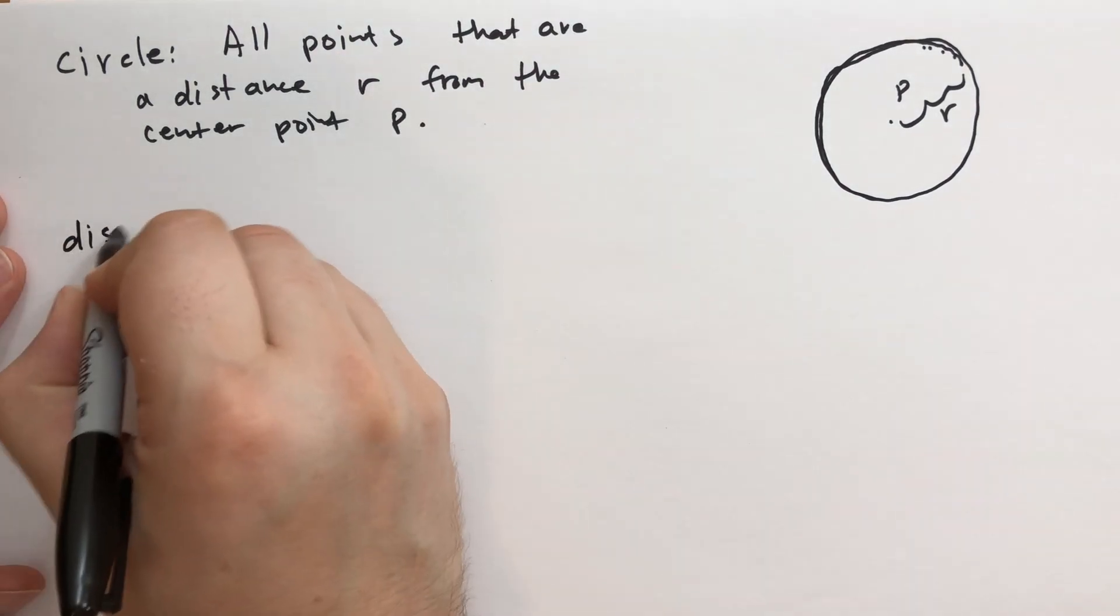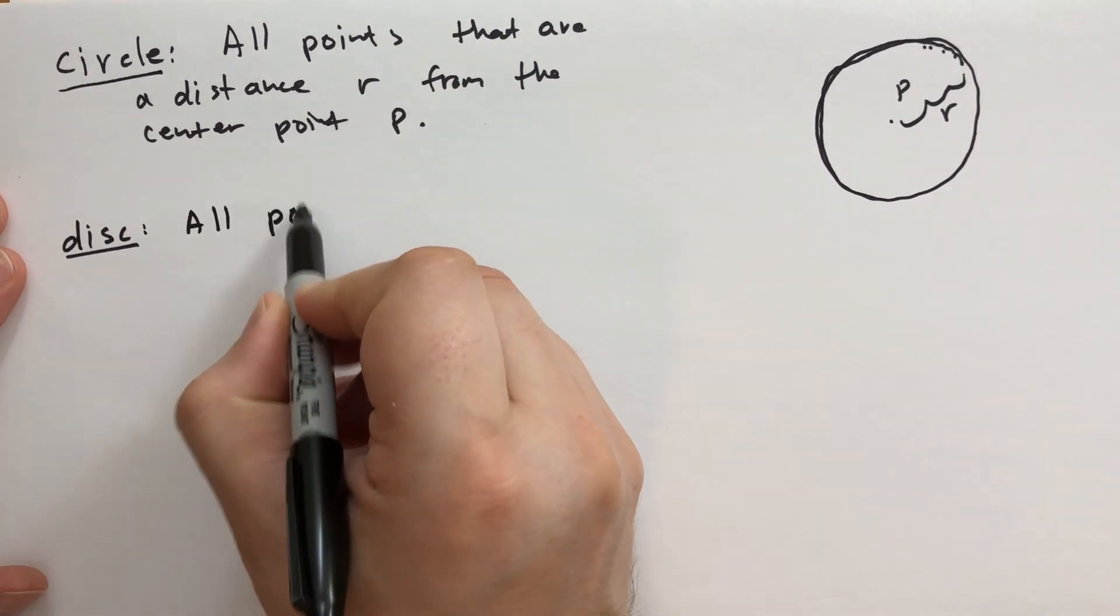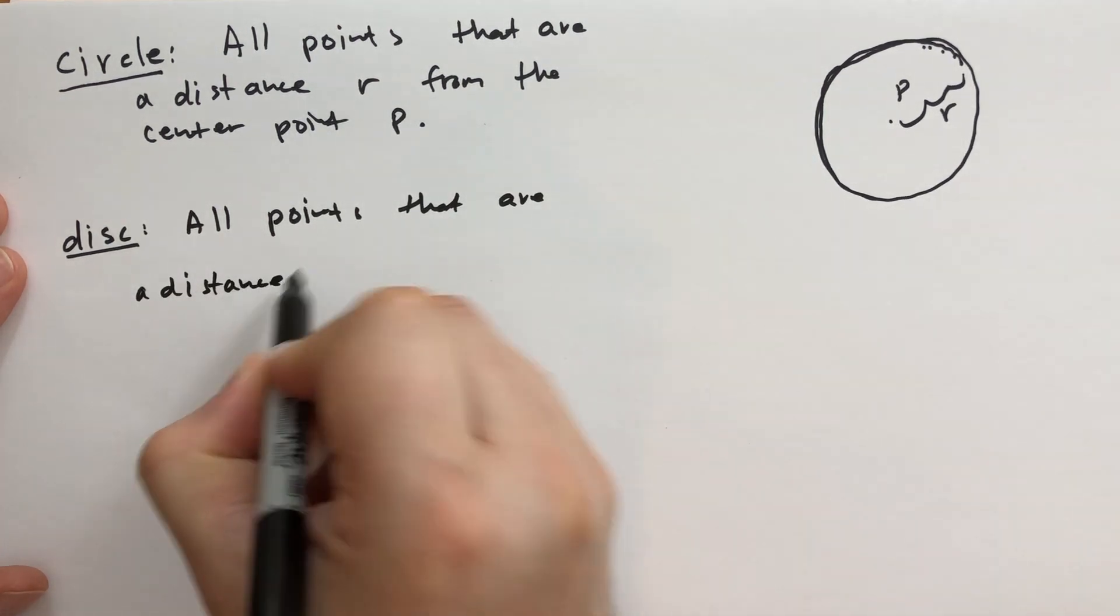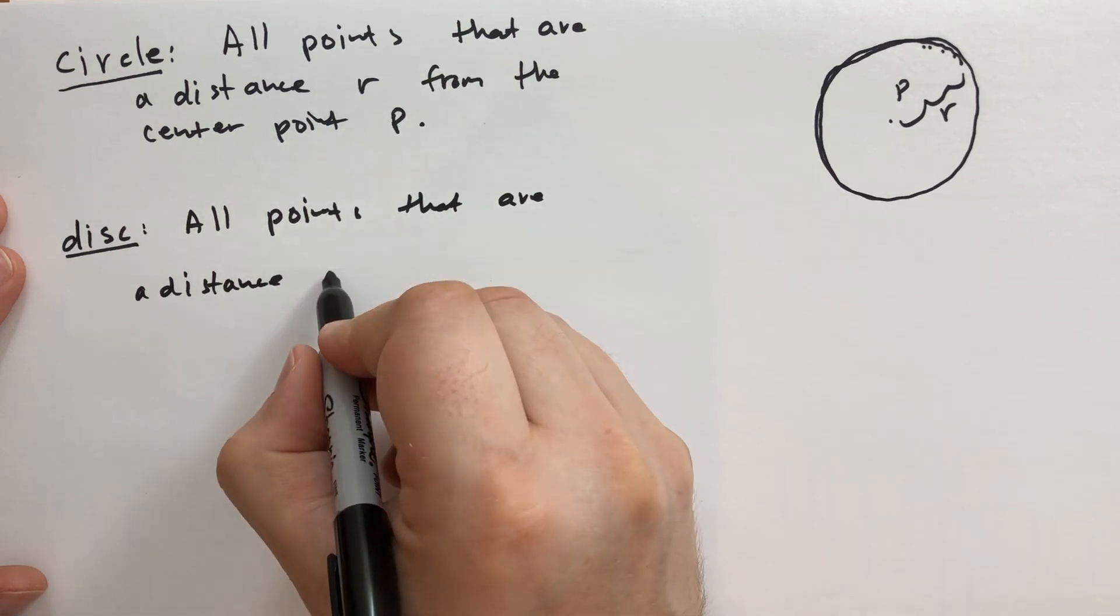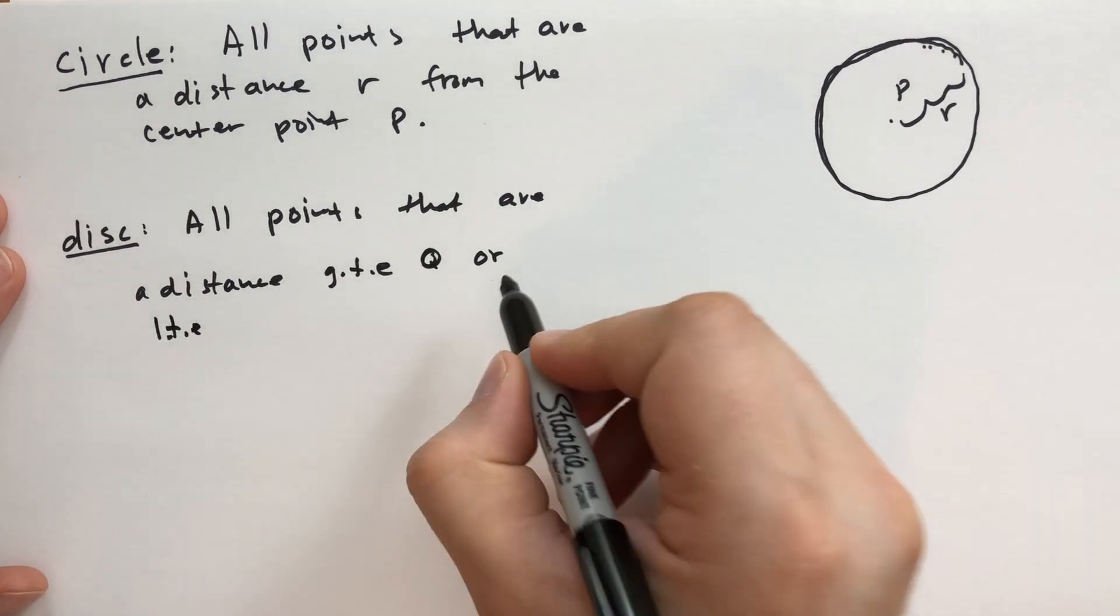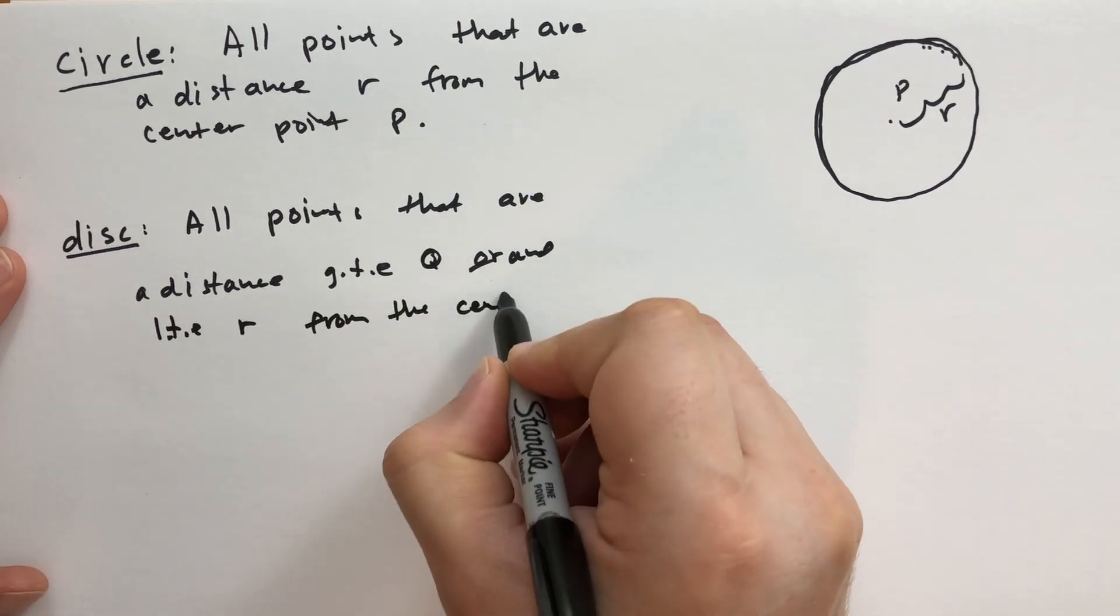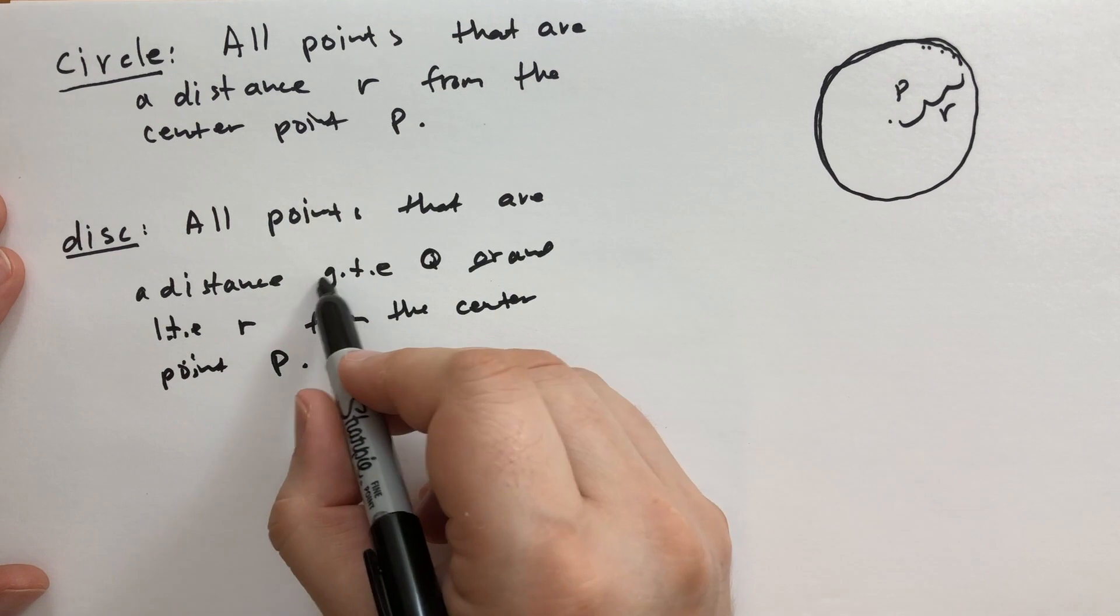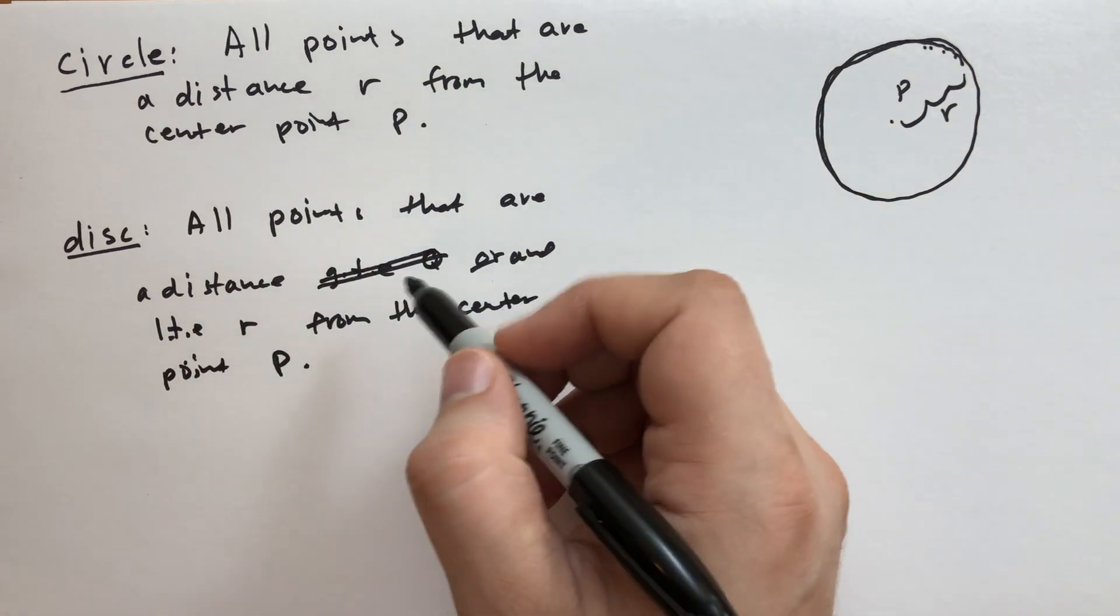A disk, on the other hand, and sometimes people confuse disks and circles. Even textbooks will sometimes do that. This is all points that are a distance greater than zero. They are greater than or equal to zero, zero or less than and less than or equal to R from center point P. I don't really need to say zero because that R less than or equal R. Because the reason why we don't have to say greater than or equal to zero is because distance is always greater than or equal to zero.